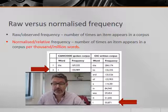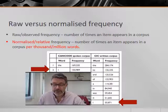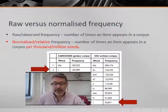Corpus linguists can obtain a lot of useful information simply by looking at the frequencies of items in a corpus. The number of occurrences of an item in any corpus is referred to as its raw frequency, or sometimes its observed frequency. When looking at corpus data, we can distinguish between raw or observed frequencies and normalized or relative frequencies.